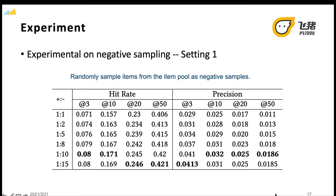Setting 1: for each positive sample, we randomly sample items from the item pool as negative samples. The experimental results is shown in this table.